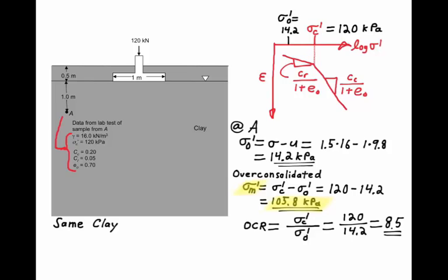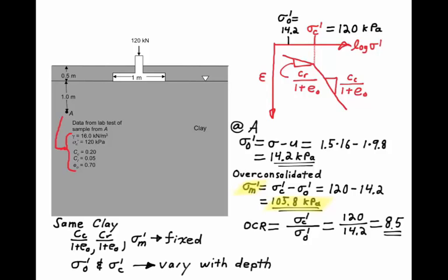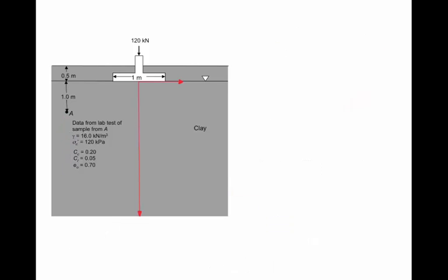This footing is resting on a single clay layer, but just because it's the same material does not mean the properties are always uniform with depth. If we assume this is the same soil everywhere, that will mean that the slope of the virgin curve, the slope of the reload curve, and the over-consolidation margin are fixed. But we know that the existing vertical effective stress varies with depth, and therefore the pre-consolidation stress must also vary with depth. So when we say we're on the same soil deposit, some properties are uniform with depth and some aren't.